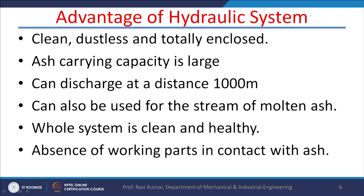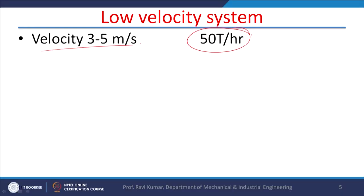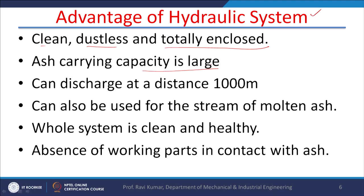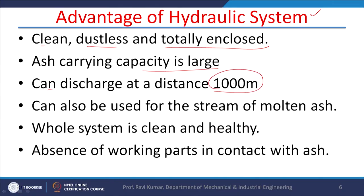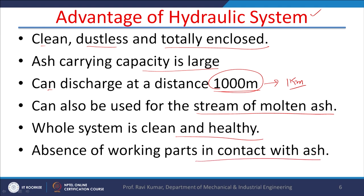The hydraulic system has certain advantages. First, it is clean — dustless and totally enclosed. Ash carrying capacity is large; unlike the mechanical system, we can increase water velocity to carry more ash. Ash can be discharged at a distance of 1000 meters — 1 kilometer — away from the plant, which is a major benefit. It can be used for a stream of molten ash, and there are no working parts in contact with the ash, which is another advantage.